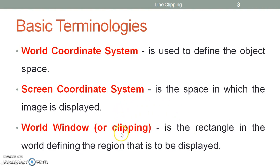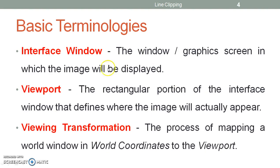Whatever we have inside the clipping window is going to be displayed on the screen, whereas the part of the object or image which is outside this clipping window would be discarded. The screen on which the image is being displayed is known as the interface window, and the rectangular portion on the interface window where the image is actually going to appear is known as the viewport. To display an image, the world coordinate system is converted into the screen coordinate system, and this transformation is known as viewing transformation.